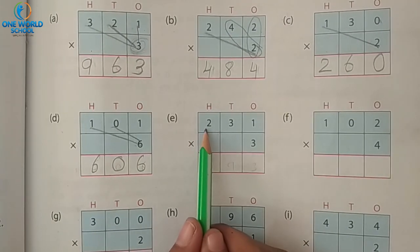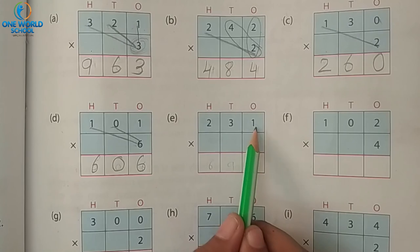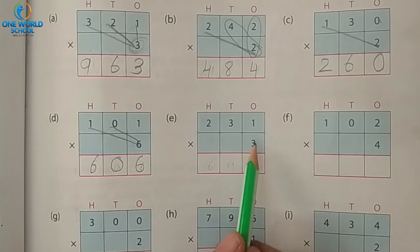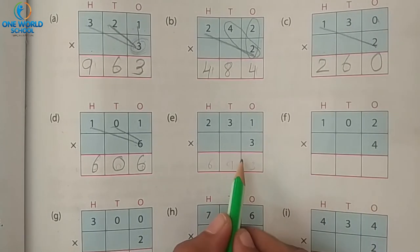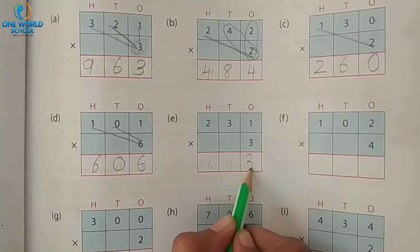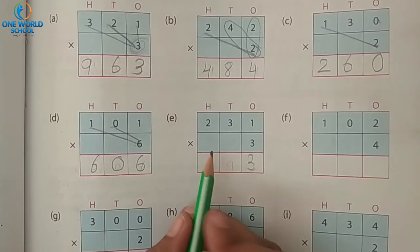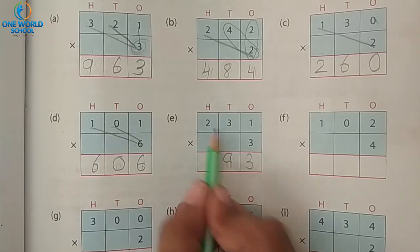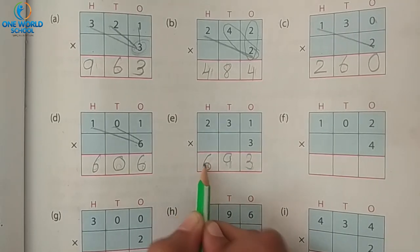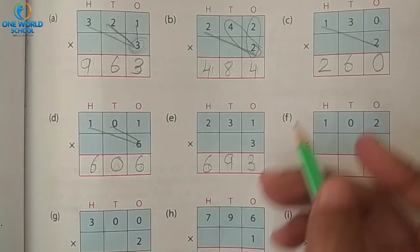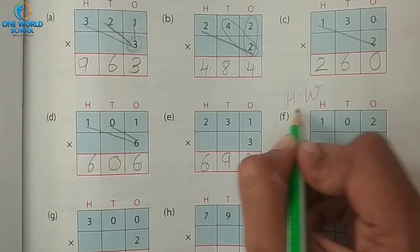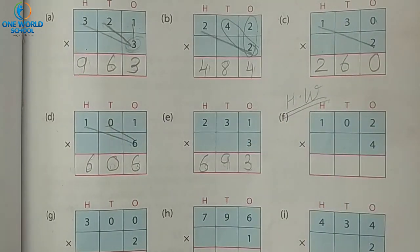Number E: two hundred thirty-one multiply by three. Three ones are three. Three threes are nine. And three twos are six.